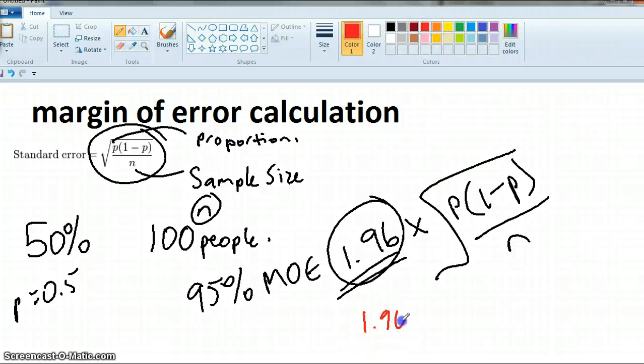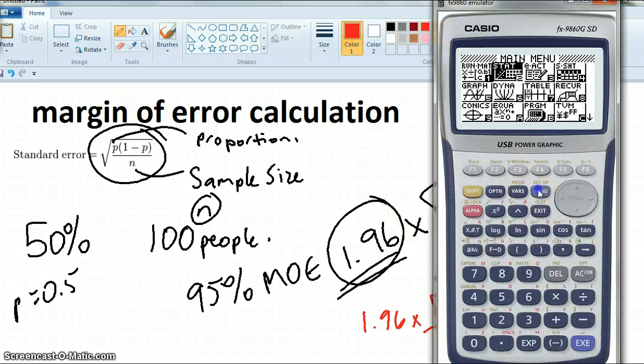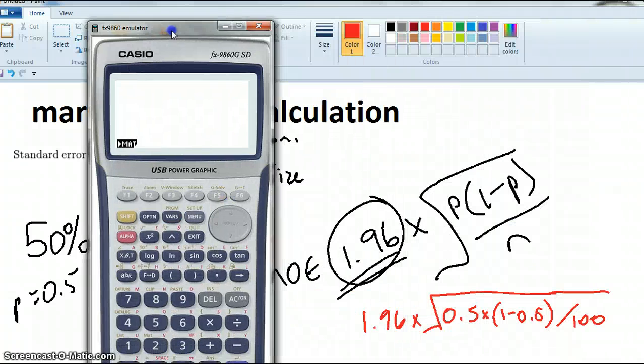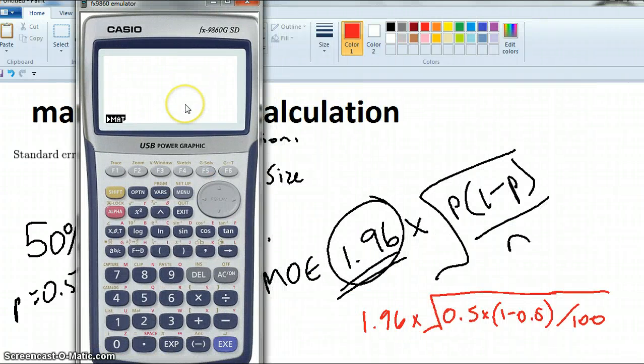So we're going to have 1.96 times the square root. We're going to have 0.5 times 1 minus 0.5. And then we're going to divide by 100. So, okay, that's all inside the brackets. So the key to do that on your calculator, and this is where a lot of people get confused, is with the brackets.